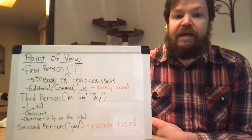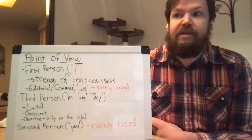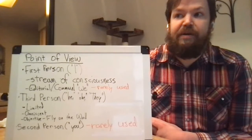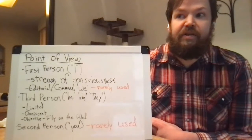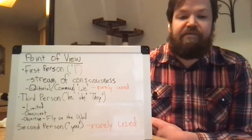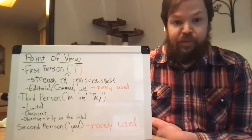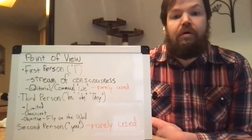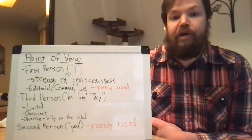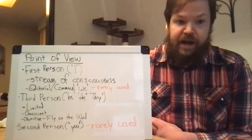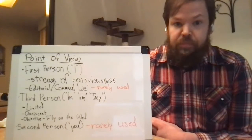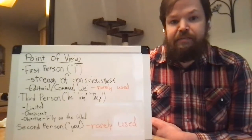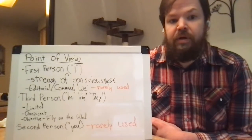'We' is basically representing the community or the city — kind of the values of a group of people. 'We' is very rarely used in writing as a point of view.